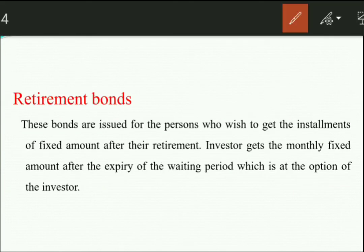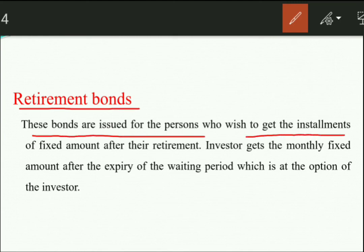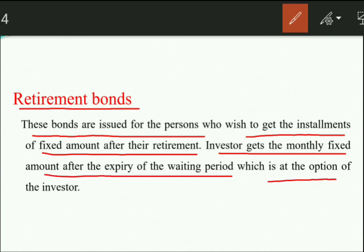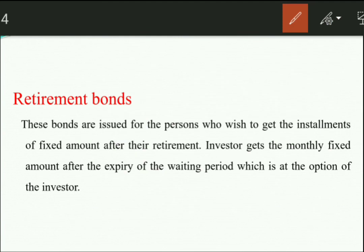Next is the Retirement Bond, a new financial instrument. People need retirement funds, so some companies have issued retirement bonds. A retirement bond means you receive the fund after retirement in the form of installments. These bonds are issued for persons who wish to receive a fixed monthly amount after retirement. The investor gets a monthly fixed amount after the expiry of the waiting period. For example, after the age of 60, you receive a monthly installment. Many companies are currently active in the retirement bond market.